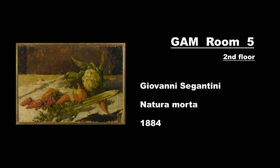But having studied in Brera, here he shows us that he knows perfectly the genre of still life — a subject that from Caravaggio onwards has never really gone out of fashion. In this painting, which represents a table covered with a crumpled white canvas and above it some common vegetables, Segantini doesn't use yet the divisionist technique.